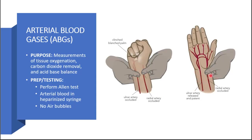Arterial blood gases are usually taken from the radial artery, which is occluded while we allow blood flow through the ulnar artery. A positive or normal result is when the hand quickly becomes warm and returns to its normal color, telling you that one artery alone is enough to supply blood to the hands and fingers. An abnormal result is if the hand remains pale and cool while you're suppressing the radial artery — meaning blood will not be collected from that artery or hand.